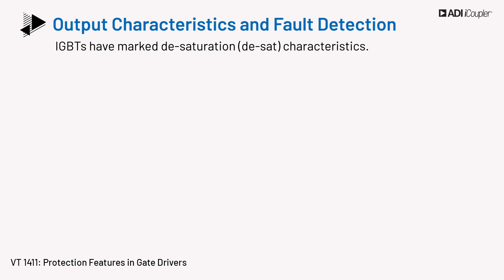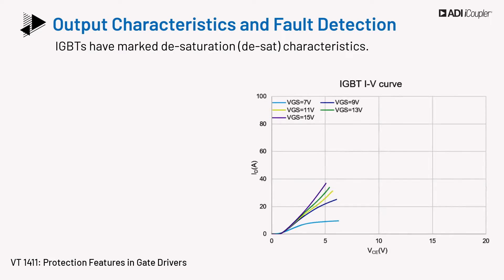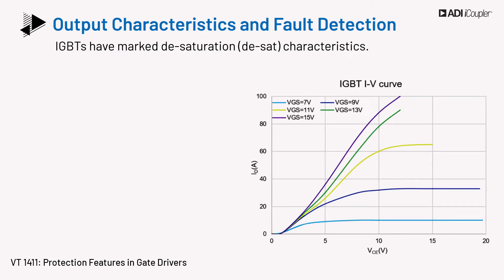IGBTs have marked desaturation, also called desat characteristics. In power applications, the IGBT is operated in its saturation region. From the IV curve of the IGBT, we consider the condition of when VCE is increasing, indicating that the IGBT is not in the saturation region.